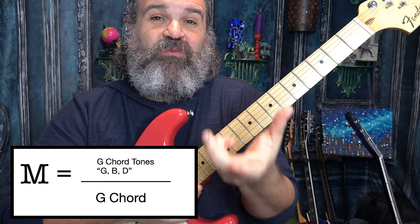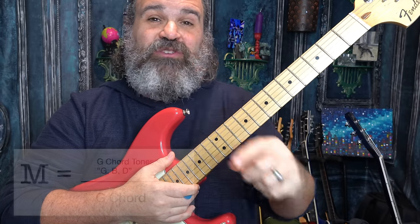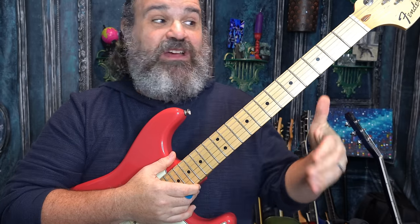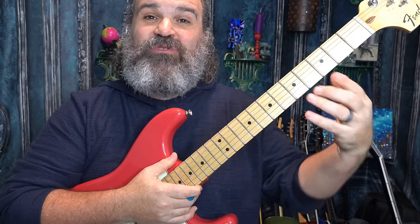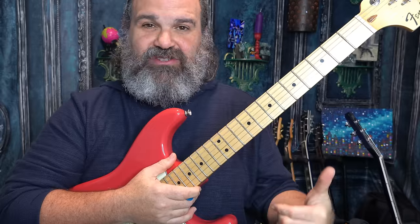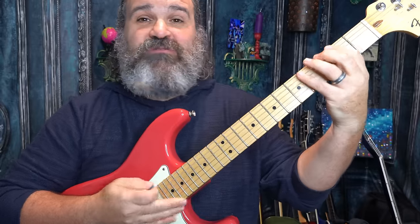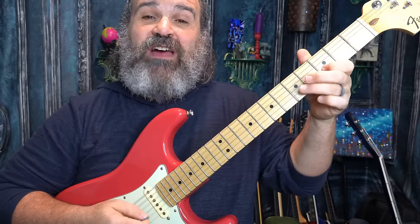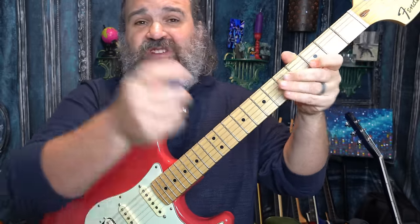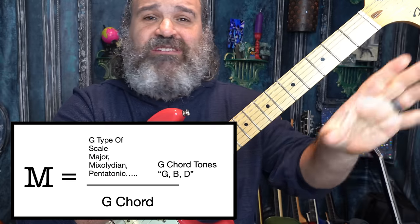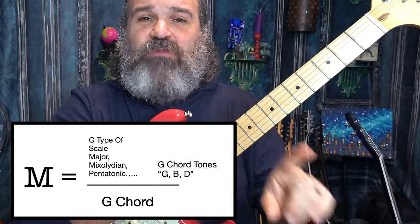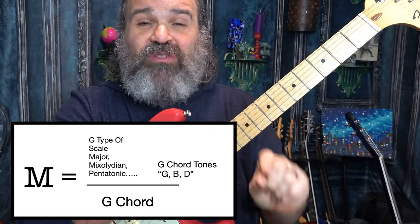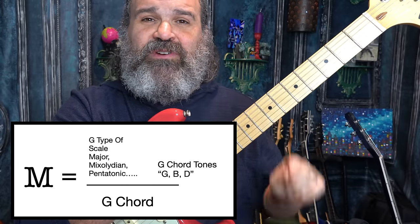Also, you're going to find a scale that relates to the G — it could be a G major scale that sews the chord tones together. It could be a G mixolydian, G lydian, whatever. I'll explain all this stuff in future videos.